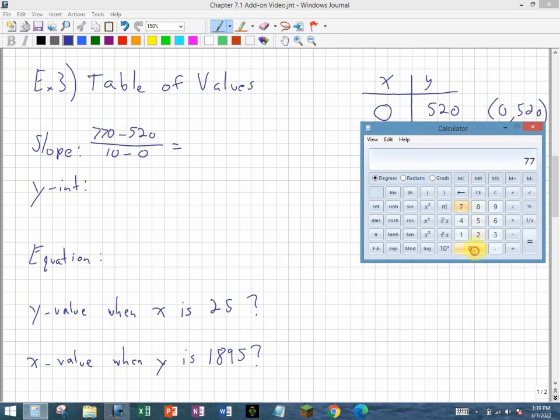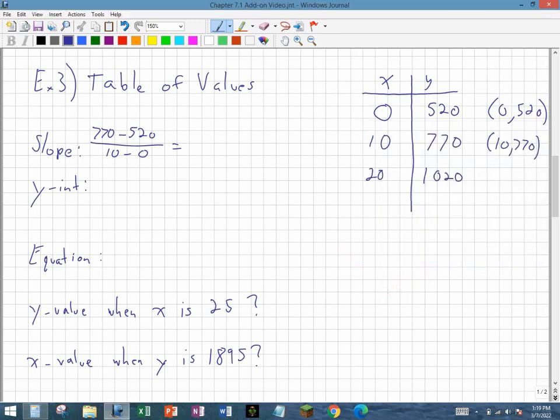770 minus 520, you can use your calculator for that if you need to. So 250 over 10. I could reduce this, and I could just say this slope is 25 over 1, or just simply 25. So the slope in this case is 25, or 25 over 1 might be a better way to write it, so you know what your rise and your run are.